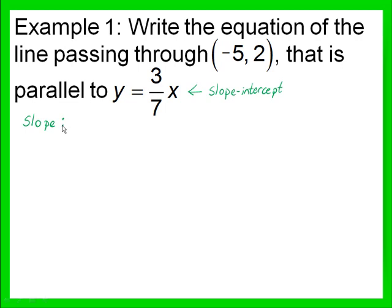So the slope — the coefficient of x — is 3 over 7. The other thing that we need for our equation is where does it cross the y-axis. We can find that from the slope-intercept equation if we take the ordered pair negative 5, 2, and remember that the first number is an x number and the second number is a y number. We can take that information and plug it into the slope-intercept form.